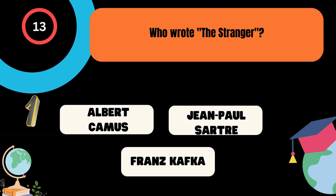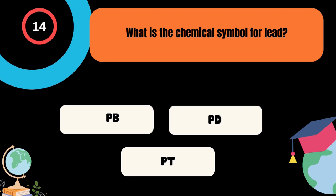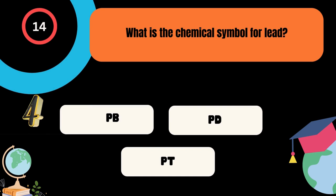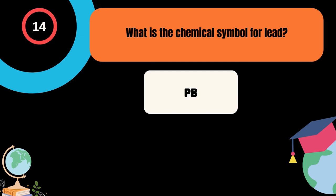What is the chemical symbol for lead? A. Pb, B. P, C. Pt. And the correct answer is Pb.